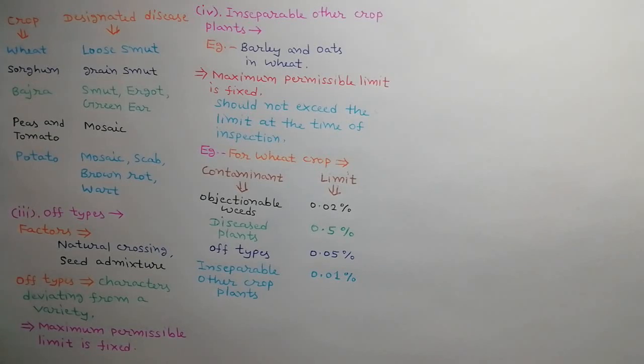The maximum permissible limits for the above mentioned contaminants have been fixed. So at the time of inspection it is verified that these contaminants should not exceed the limits. For example, in certified seed crop of wheat, objectionable weeds, diseased plants, off-types, and inseparable other crop plants should not be more than 0.02%, 0.5%, 0.05%, and 0.01% respectively.